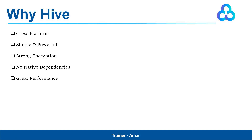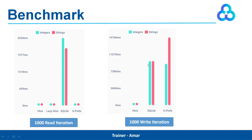Let me compare the performance in the next slide. As you can see, these two graphs represent the benchmark for 1000 read iterations and 1000 write iterations. For 1000 read iterations, Hive is taking the minimum time, whereas SQLite is taking the maximum time. The light green bar shows the read for integers and the light red color bar indicates the read operation for strings. Similarly, if we compare the 1000 write iterations, Hive is taking the minimum time, whereas shared preferences is taking the maximum time.